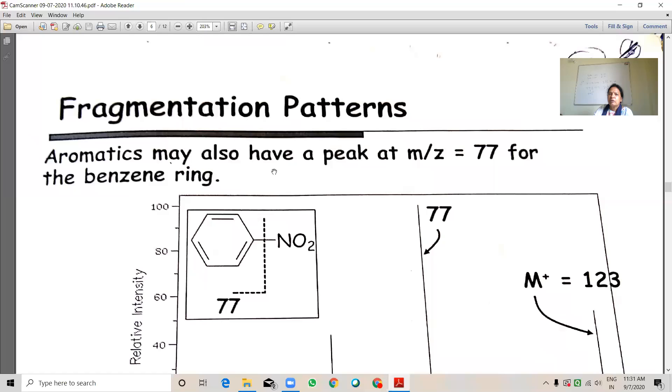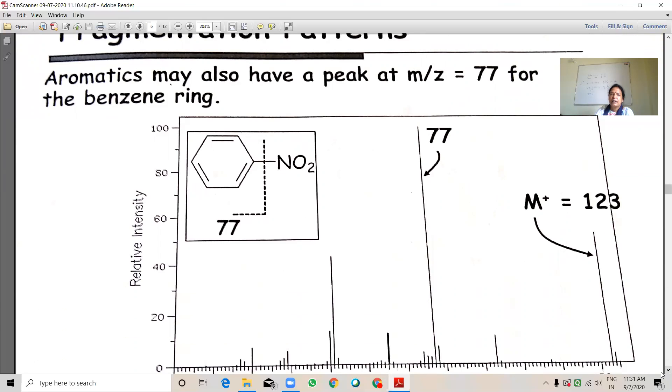Aromatics may also have a peak at m/z 77 due to the phenyl. It is here in this case. It is a high abundance peak. 77. Nitrobenzene.